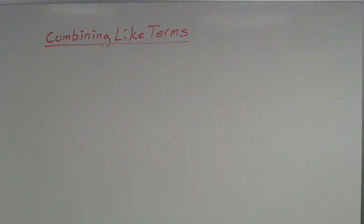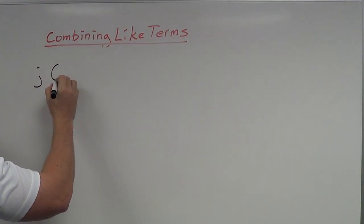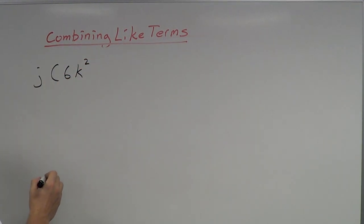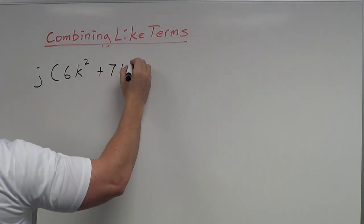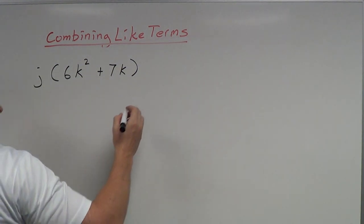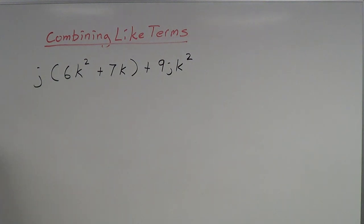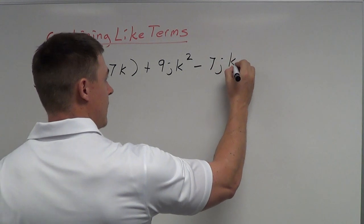Something else, another example of combining like terms. This one I'm going to write down actually is a distributive property example which has a variable in it. And I'm using different variables here instead of those x's and y's that we commonly refer to. So j times the quantity 6k² + 7k plus 9jk² - 7jk.